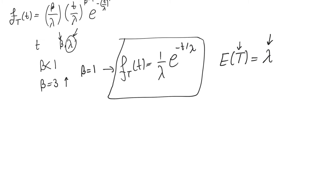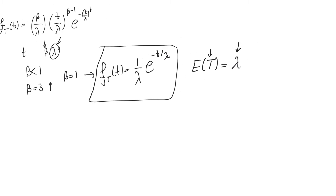So what does lambda represent? Lambda represents the average amount of time between seeing one failure and then seeing another — the mean time between failures. We actually touched on this before when we discussed metastability, because metastability is itself a reliability problem. This mean time between failures has a specific name: Mean Time Between Failure, or MTBF. It is the expected value of the PDF and is simply the parameter lambda.